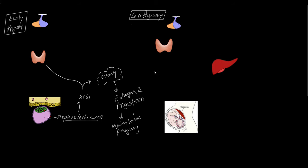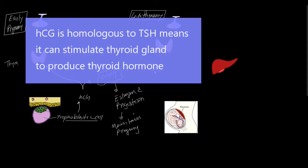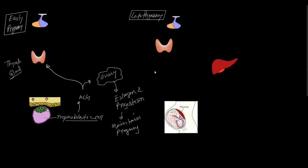On the other hand, HCG has another important function. HCG is homologous in function to thyroid stimulating hormone. As we know, thyroid stimulating hormone coming from the anterior pituitary gland acts on receptors present on the thyroid follicular cell to stimulate the formation of T3 and T4. During pregnancy, HCG acts just like thyroid stimulating hormone on the TSH receptor present on the cell surface of the thyroid follicular cell, and stimulates the synthesis of T3 and T4 just like TSH.